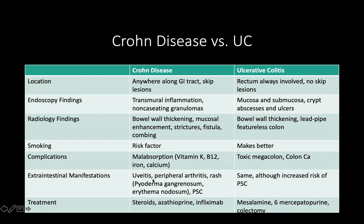Extraintestinal manifestations are similar across both Crohn's disease and ulcerative colitis, including uveitis, peripheral arthritis resembling ankylosing spondylitis, and rashes like pyoderma gangrenosum or erythema nodosum. Primary sclerosing cholangitis can be seen in both, but is more common in UC. That's an important point to remember.